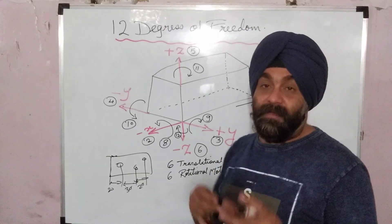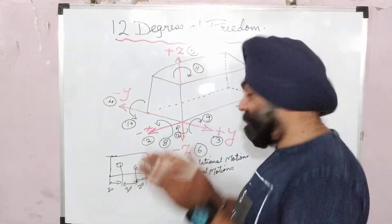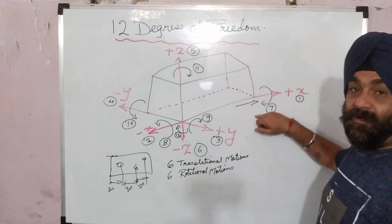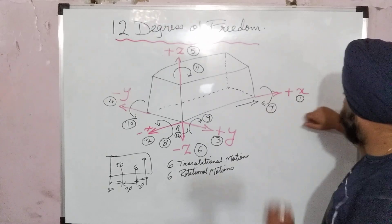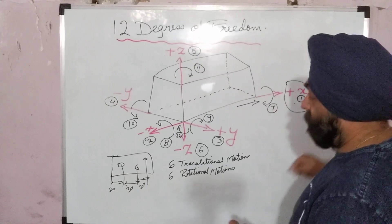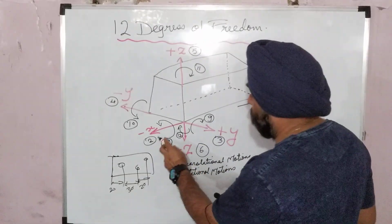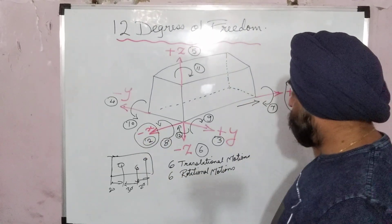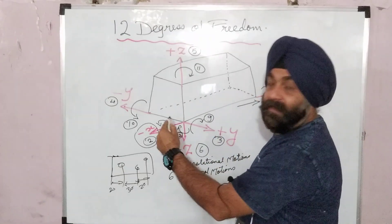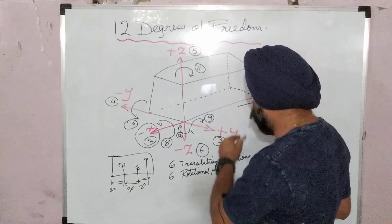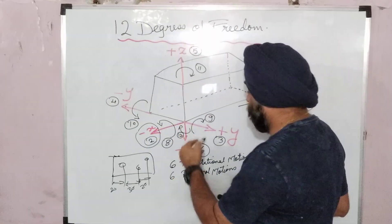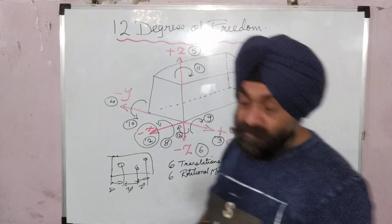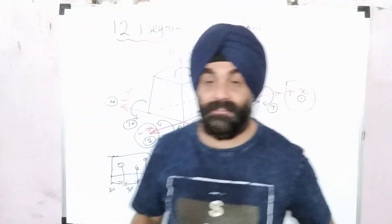You have six translational motions and six rotational motions. For translations: first you have plus X, then minus X — that is two. Perpendicular to that is Y, so you have plus Y and minus Y — two more. Then you have the Z axis: plus Z and minus Z. So those are the six translational motions.